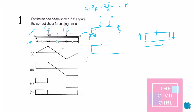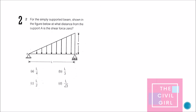Coming along, it is minus P because it is downward in direction, therefore it becomes 0. Then it will be constant till the next point, and again it is minus P so it drops further. When we reach the right support it is plus P because upward is positive, then it becomes 0. This represents option C, so the answer is option C.